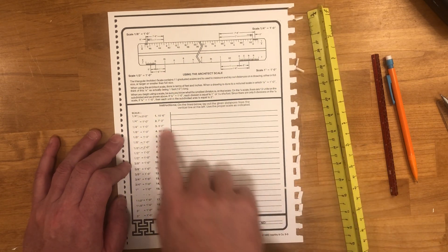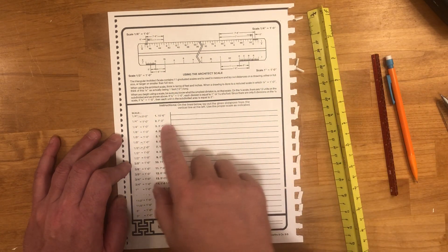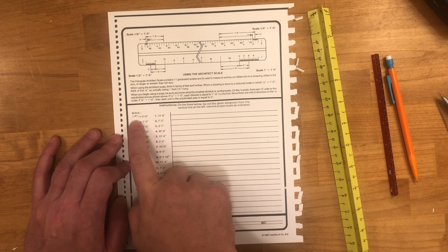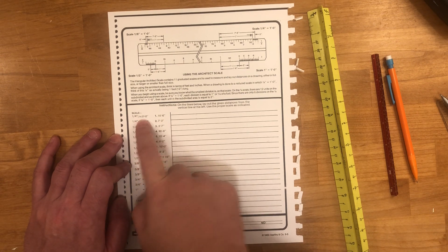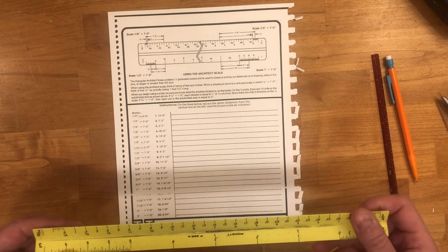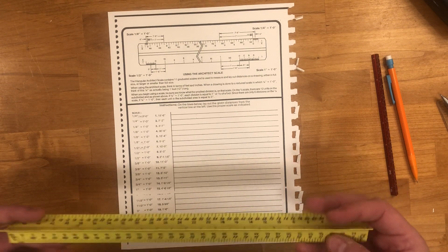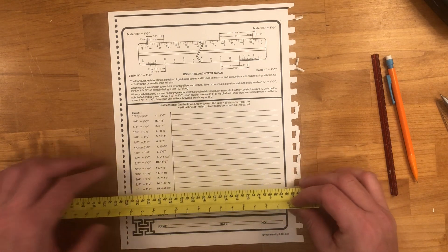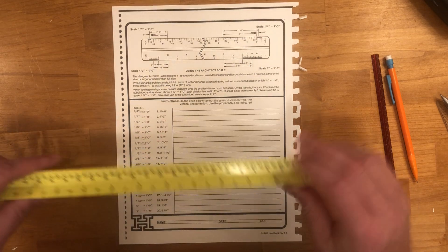When you want to draw a line of a certain length and you want to illustrate that that line is 15 feet 6 inches when a quarter inch equals 1 foot, you're gonna do that like this. So let's find a quarter inch scale, 15 feet 6 inches.